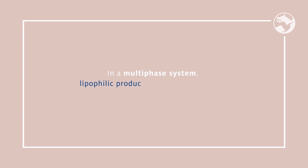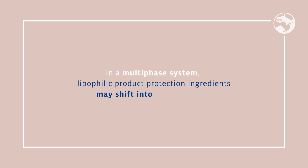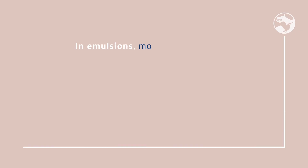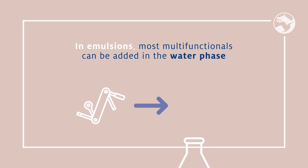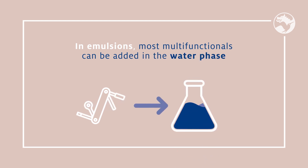In a multi-phase system, lipophilic product protection ingredients may shift into the oil phase. What ultimately matters is not only how much ingredient is added, but also how much of it ends up in the aqueous phase. Adding a solubilizer such as a short- to medium-chain alcohol like pentylene glycol may help by altering the partitioning. In emulsions, most multifunctionals can be added in the water phase or at the end of the emulsification process, although the former is preferred because some ingredients may influence the emulsion stability — either positively or negatively. In cases of destabilization, possible remedies may include increasing the emulsifier use level or swapping the emulsifier for another kind.